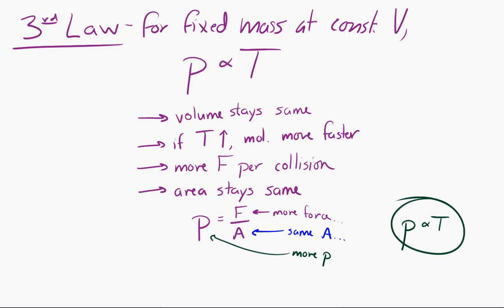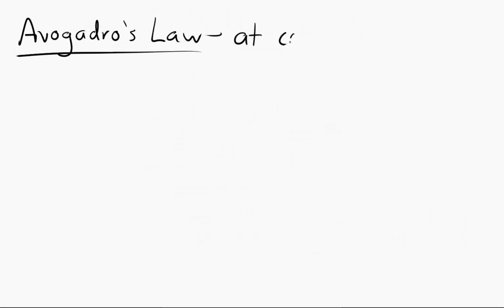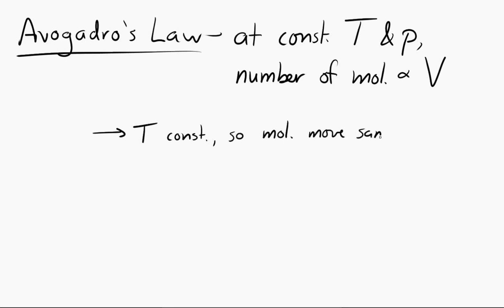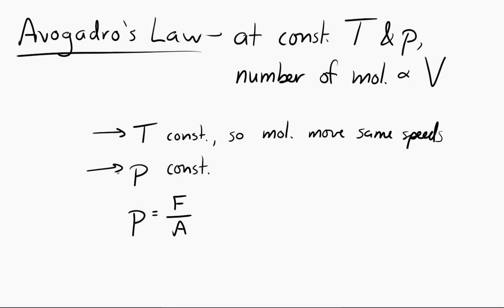The last of the gas laws is Avogadro's law, which states that at constant temperature and constant pressure, the number of molecules is proportional to the volume. If we keep the average kinetic energy of the molecules the same — that is, temperature is constant — and the pressure has to stay the same, then if we increase the number of molecules, we also have to increase the amount of space they have to move around in. More gas molecules need more space if we must keep the same temperature and pressure.